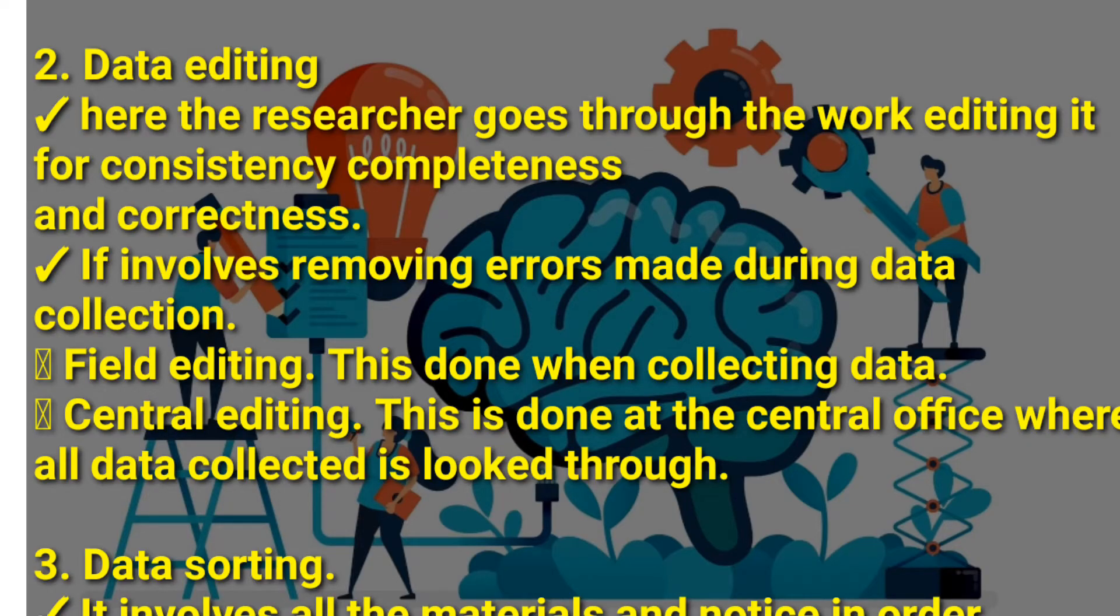Under data editing, we do two things. There is field editing—this is done when collecting the data. Then there is central editing—this is done at the central office where all data collected is looked through. Field editing is done in the field, and central editing is done at the office. After editing the data, you sort the data.